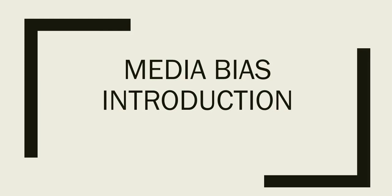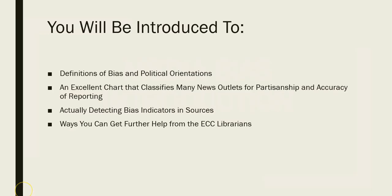Welcome to this video discussion on Media Bias from the ECC Library. This video will teach you how to start thinking about and spotting media bias in sources. The first step to understanding anything is to define it. So we will define bias, and we will also briefly discuss the political orientations that can often lead to intentional and unintentional bias. We're going to look at several examples of sources to identify where minimal or balanced bias is occurring, and where significant bias is occurring. As we look at bias, we're also going to look at the quality of reporting the news — whether a source is delivering facts or giving opinions, or even inaccurate and fabricated information. Let's get started.